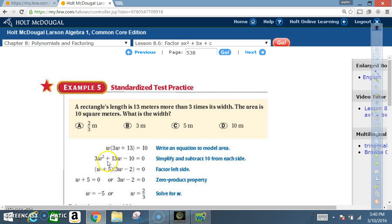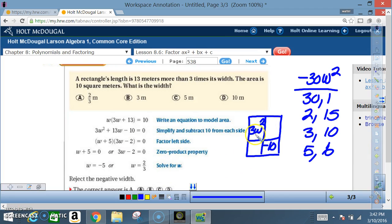to factor. So we set up our square. We know that the first term, 3w squared, goes there. The last term, negative 10, goes there. You multiply both: 3w squared times negative 10 will give us negative 30. Now we write down all our factors for 30, not worrying...